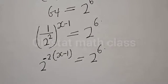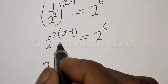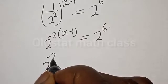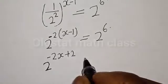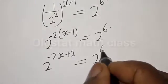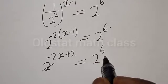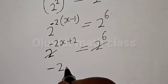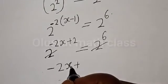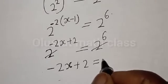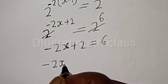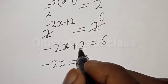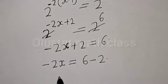Now let's expand the bracket: 2 raised to power minus 2 times s minus 2 times minus 1, that is minus 2s plus 2, is equal to 2 raised to power 6. Since we have the same base, we equate the exponents: minus 2s plus 2 is equal to 6.